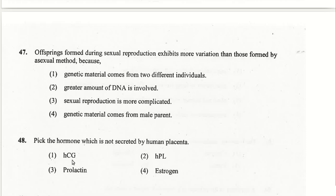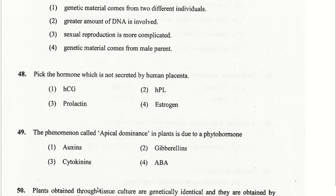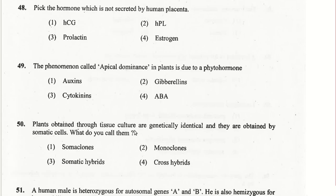Human chorionic gonadotropin, human placental lactogen, and estrogen are all secreted by the human placenta, but prolactin is not. The phenomenon called apical dominance in plants is due to auxins. The first option is the right answer for question 49.